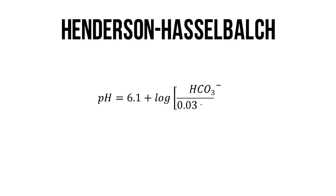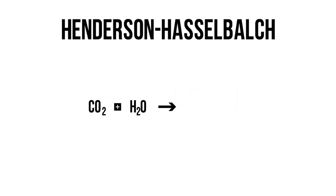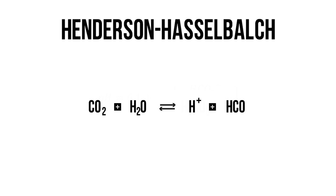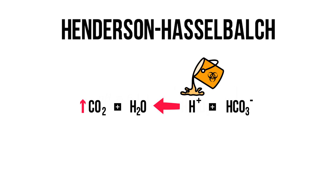Let's go back to high school. Remember the Henderson-Hasselbalch equation? It relates CO2 to hydrogen and bicarbonate. CO2 plus H2O becomes H2CO3, however this disintegrates immediately into hydrogen and bicarbonate. So what happens if we add a bucket of acids to our body? Well the equation shifts to the left, so we're stuck with more CO2. Fortunately, our lungs will work extra hard to get rid of this.